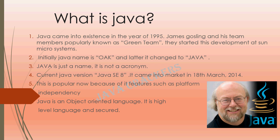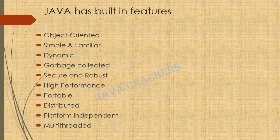Unlike C and C++, Java is an object-oriented language — it follows OOP concepts. It is a high-level language and is secured. Java is secured because memory allocation and deallocation are taken care of by the interpreter. In C, we have to write code for memory allocation and deallocation, so C is not as secure when compared to Java. Java has built-in features such as object-oriented, simple and familiar, dynamic, garbage collected, secure and robust, high performance, portable, distributed, platform independent, and multi-threaded.